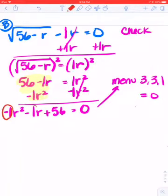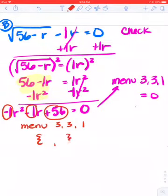Now, I'm going to use that menu 3, 3, 1, and I know I've got to put in negative 1, negative 1, and 56. Now usually when we do this menu 3, 3, 1, we end up with some kind of a set. So let's hope that's true.